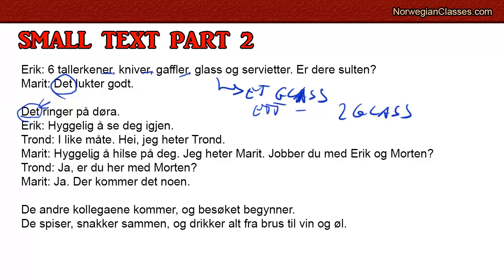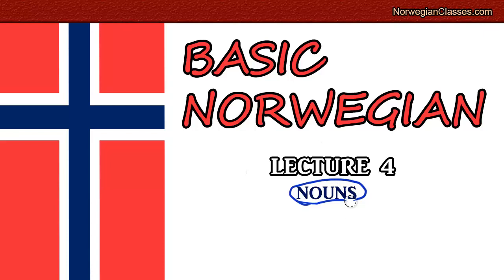'Hyggelig å se deg igjen' — nice to see you again. 'I like måte' — likewise. 'Hei, jeg heter Trond' — hi, my name is Trond. 'Hyggelig å hilse på deg, jeg heter Marit' — nice to meet you, my name is Marit. 'Jobber du med Erik og Morten?' — do you work with Erik and Morten? The other colleagues arrive and the visit begins. They eat, talk together, and drink everything from soft drinks to wine and beer. Hopefully you now understand Norwegian nouns. I recommend reading more text; you'll find material at norwegianclasses.com. Try to get in the habit of recognizing noun genders automatically. Thank you, and I'll see you in Lecture 5.